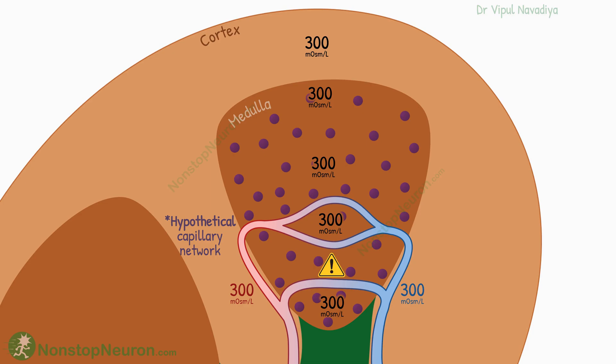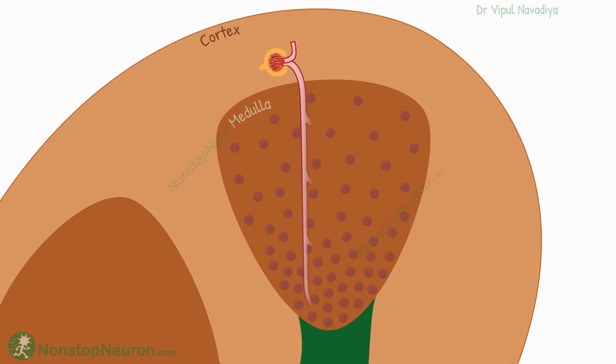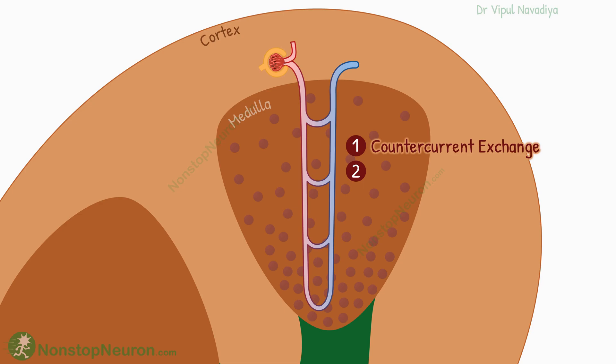To prevent this, the blood supply to the medulla is of a special type. It has two special features that prevent it from washing out the medullary hyperosmolarity: one is the countercurrent exchange mechanism, and the second is very low blood flow.